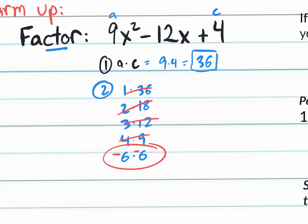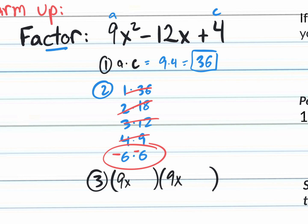The next step is to either convert this trinomial to a four-term polynomial by replacing negative 12x with negative 6x minus 6x and then factor by grouping, or use the quicker method: jump right into your factored form format with two sets of parentheses. On the first part of each binomial belongs an ax term. A is 9, so we get 9x and 9x. Then take the pair of numbers, negative 6 and negative 6, and plug them into the blank spots.